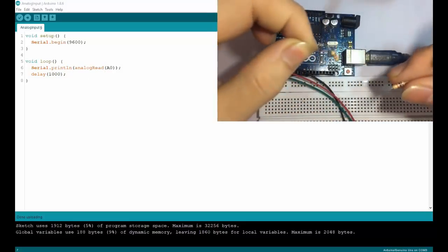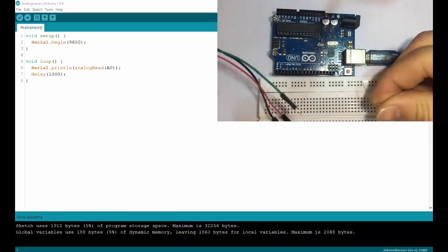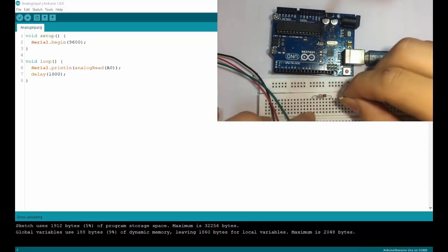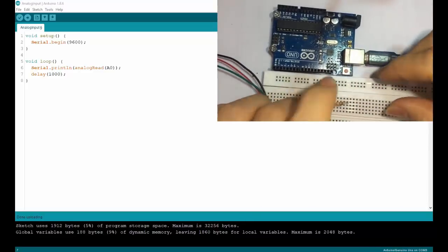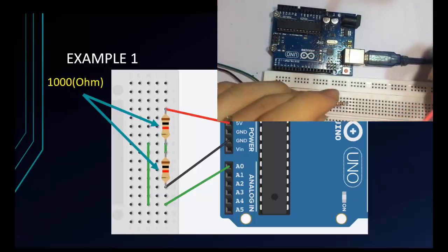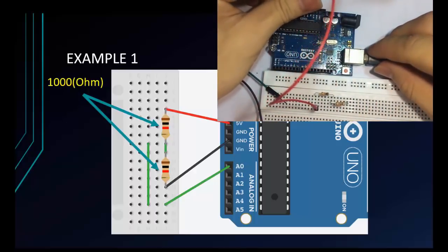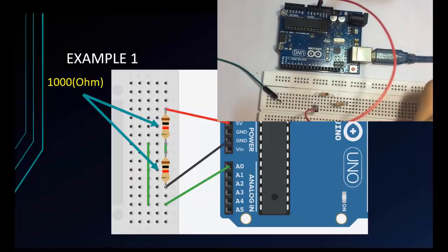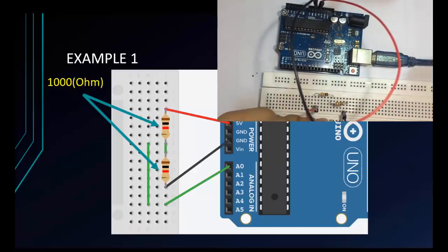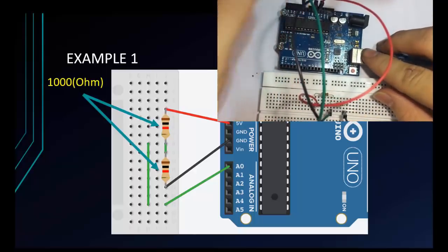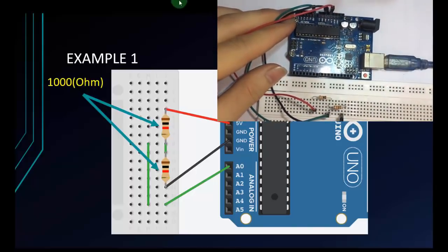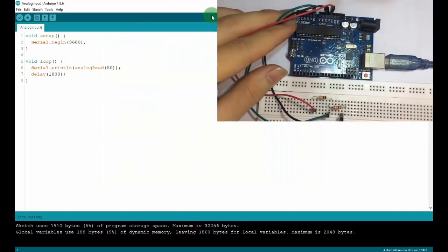Now I will connect the circuit. I have two 1000-ohm resistors. Following the diagram, I connect them in series. The red wire is for 5 volts, the black wire is for GND, and the green wire is for the analog input — I will plug it into the A0 pin. Now I will upload the code to the Arduino and connect it to the laptop.